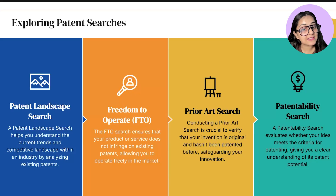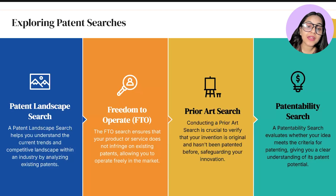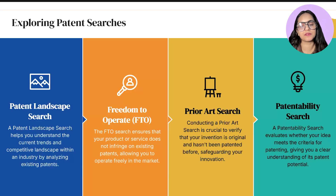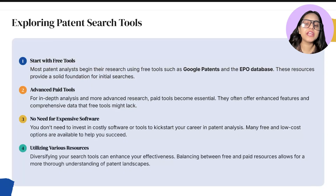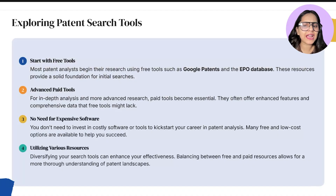There are several kinds of searches. First is patent landscape search to understand the industry. Then there is freedom to operate (FTO) to avoid infringing others' rights. Third is prior art search to ensure originality. And then you have patentability search to see if your idea can be patented. Most people start with free tools like Google Patents or the European Patent Office database. For more advanced work, there are paid tools, but either way you do not need expensive software to get started.